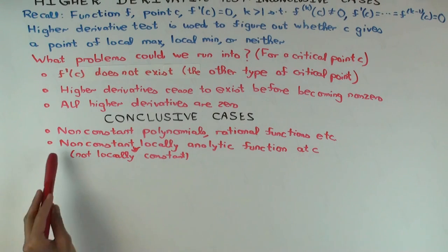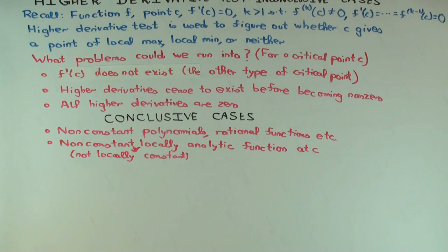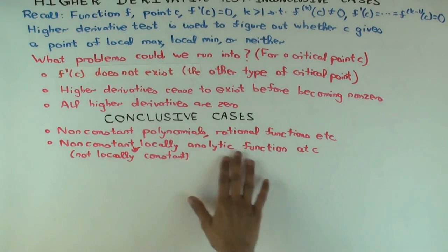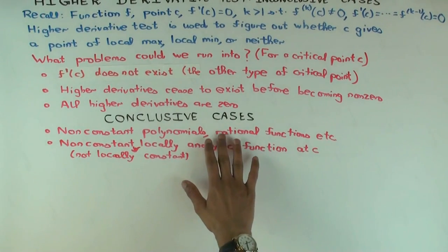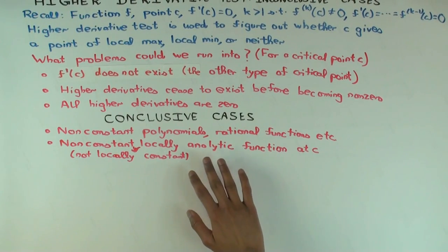So, the upshot is that none of these problems can occur and so you can use the higher derivative test. Now, what are some functions which are covered here but not covered in the polynomial rational function type situation? Well, any function which has a global power series would certainly work. So, things like sine, cosine, exponential functions and things formed by adding and subtracting these will fit in this framework but they don't fit in the earlier framework. So, this actually tells you that the higher derivative test is pretty useful at many places.